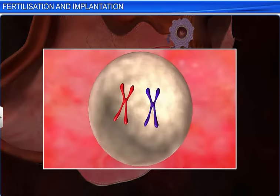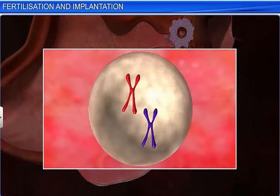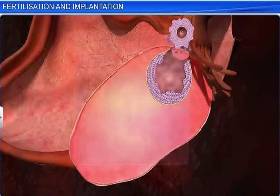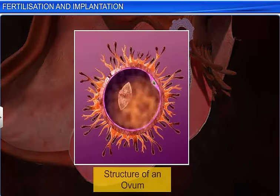Upon its release, the ovum begins to undergo the second meiotic division. However, the division does not go beyond the first phase. Interestingly, the ovum contains only the X chromosome.